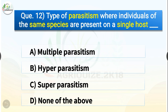Question number twelve: Type of parasitism where individuals of the same species are present on a single host is dash. The options are multiple parasitism, hyper parasitism, super parasitism, or none of the above. The correct answer is option C — super parasitism. Super parasitism is a form of parasitism in which the host, typically an insect larva such as a caterpillar, is attacked more than once by a single species of parasitoid.